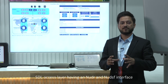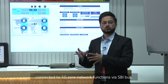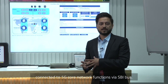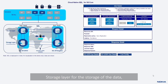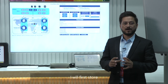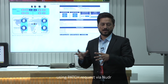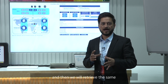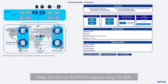The SDL access layer has NUDR and NUDSF interfaces connected to 5G core network functions via the SBI bus. The storage layer handles storage of both structured and unstructured data as UDR and UDSF. I will first store the data in the database using a PATCH request via NUDR and then retrieve the same using a GET request. I will now run the PATCH request using the 5G UDR interface.